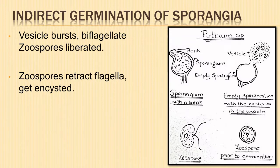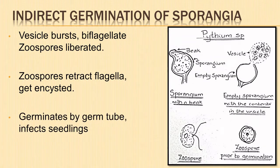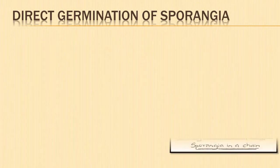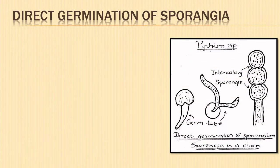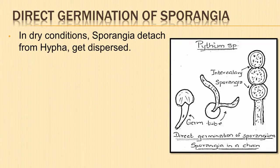The biflagellate zoospores have a tinsel flagellum and a whiplash flagellum which help them to swim in water. The zoospore comes to rest, retracts its flagella, and gets encysted by secreting a wall around itself. The encysted zoospore later germinates by a germ tube and infects a fresh seedling.